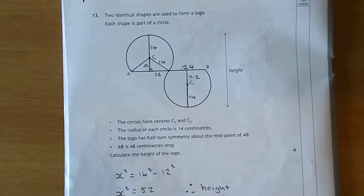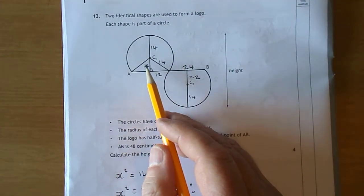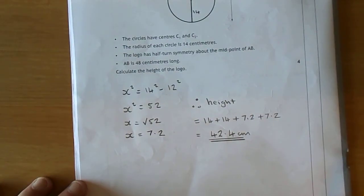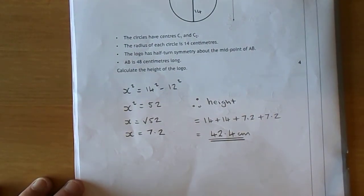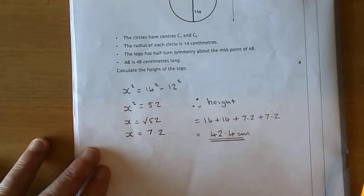We can now use Pythagoras to get X. X squared equals 14 squared take away 12 squared. There's the working there, which is 52. So X is the square root of 52, which is 7.2.